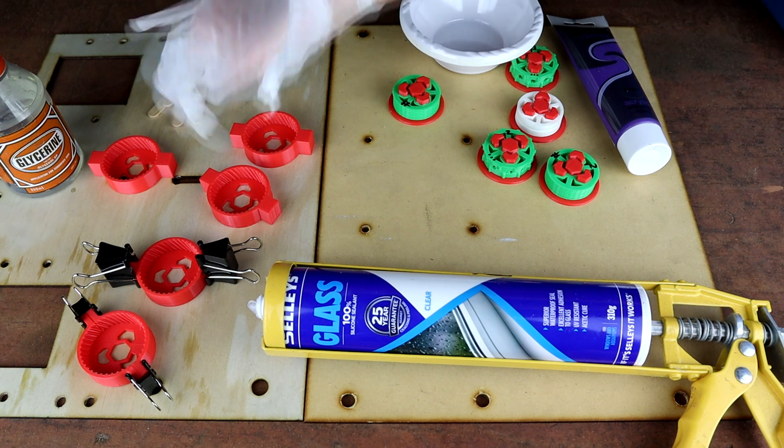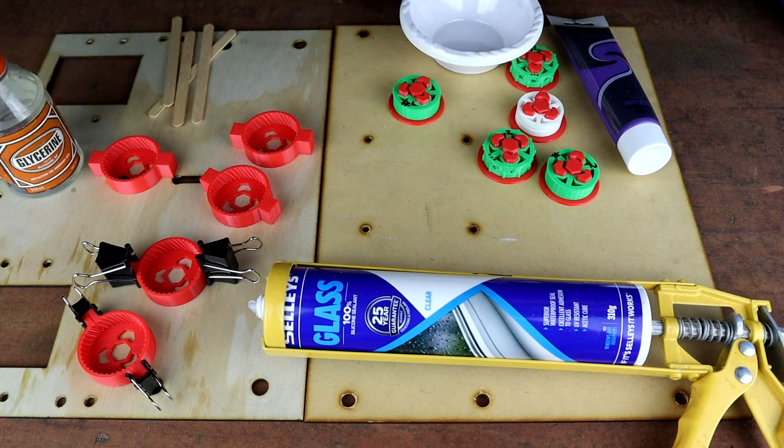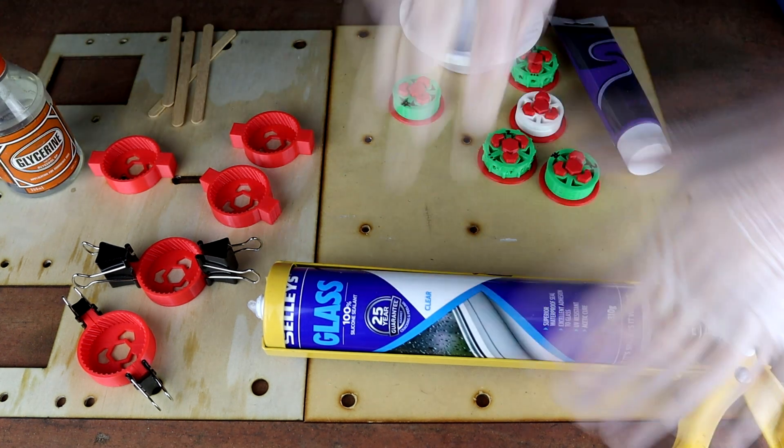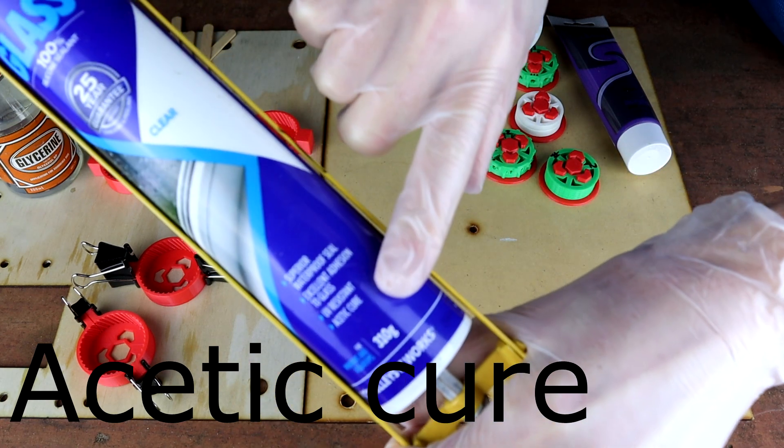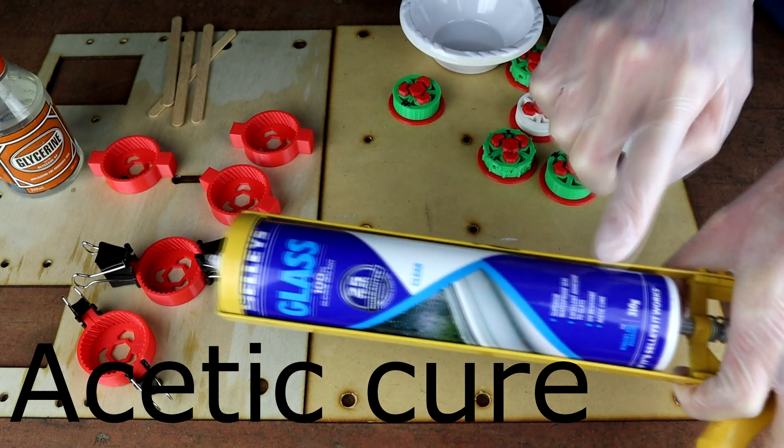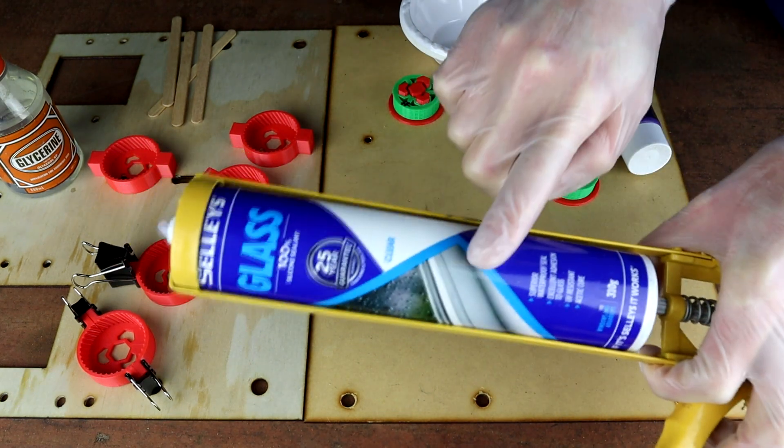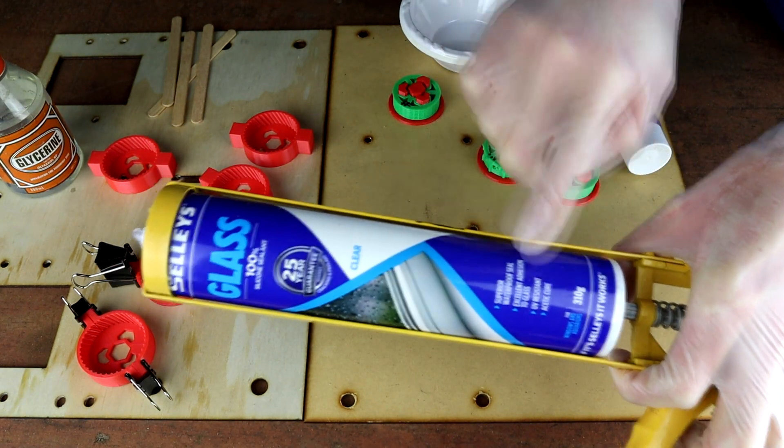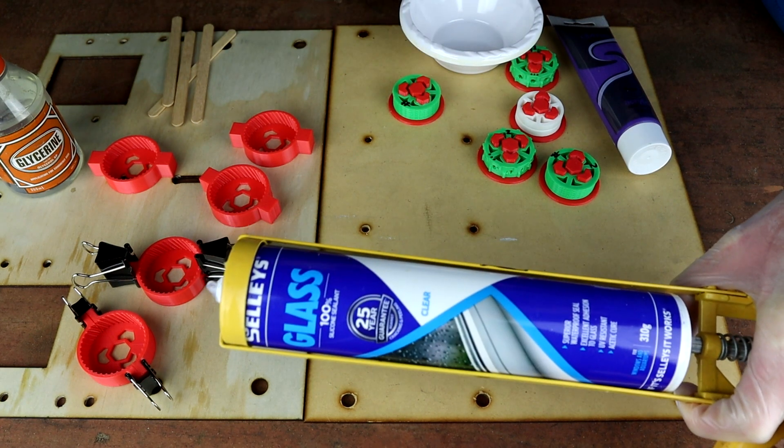It has to have a certain type of cure which is acetic cure. It says on the bottom down here if that will focus up. I will put that on the screen as well. It has to be that type of silicon and you'll be able to tell if it's that type of silicon because when it's curing it will smell very vinegary.